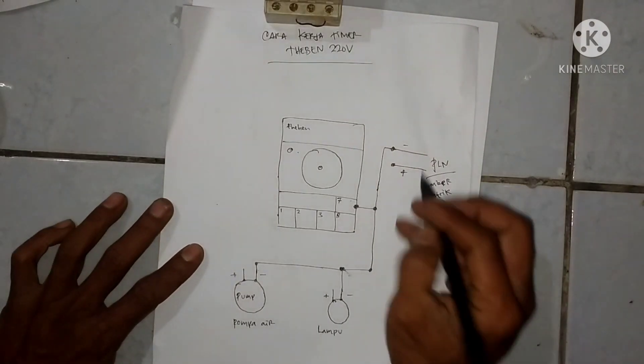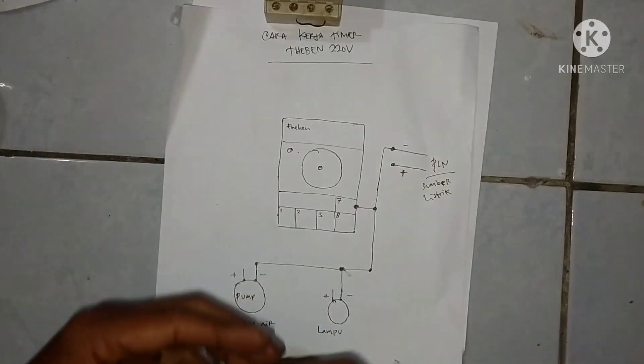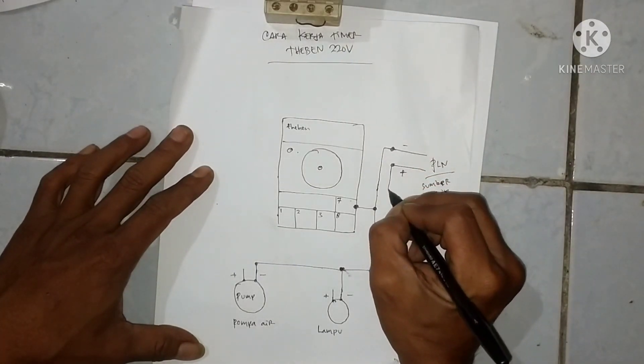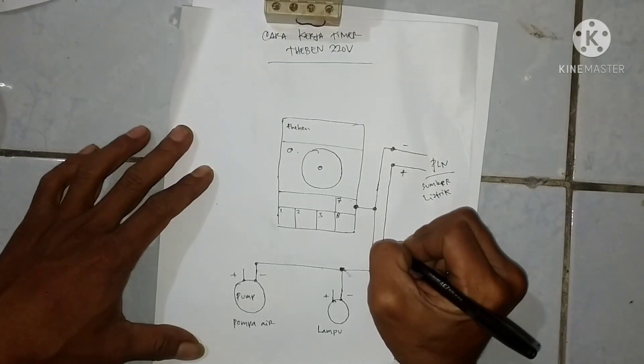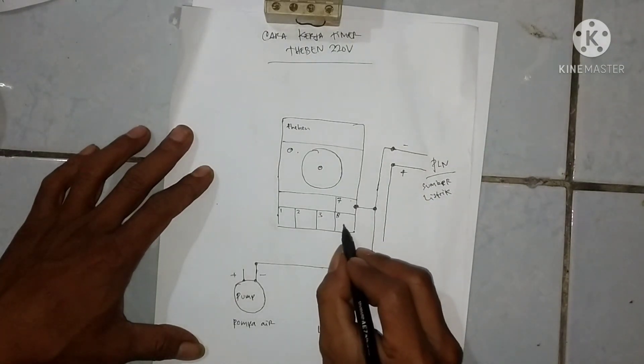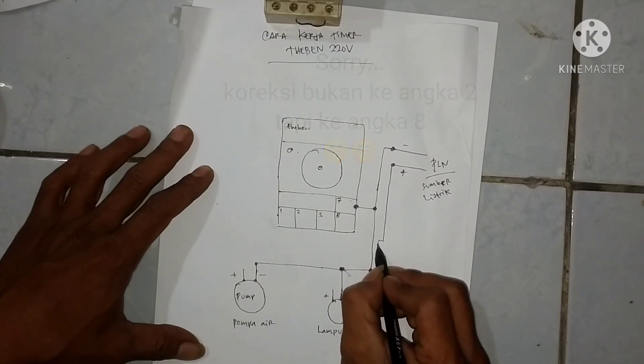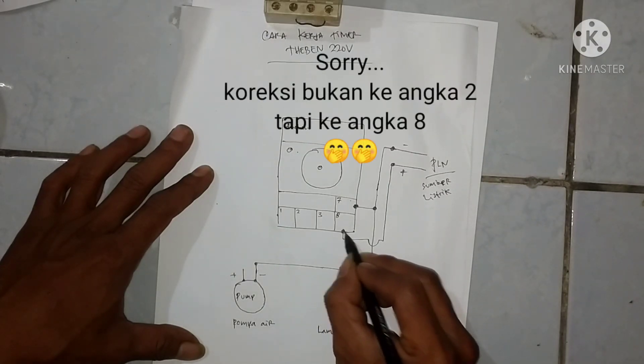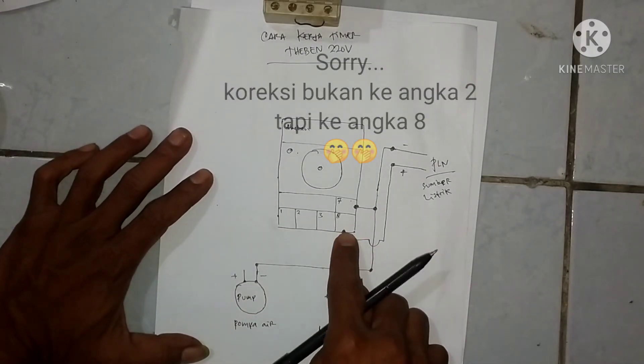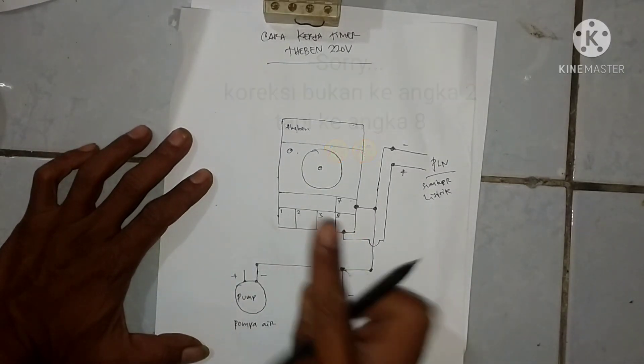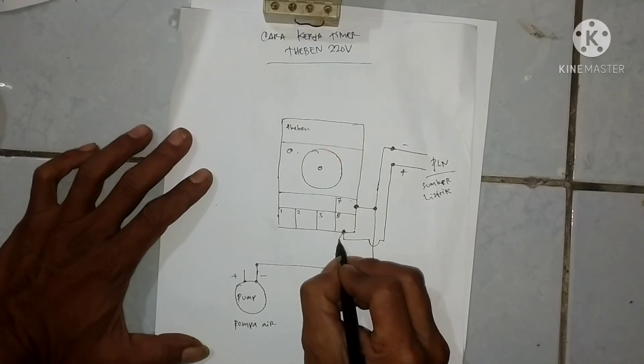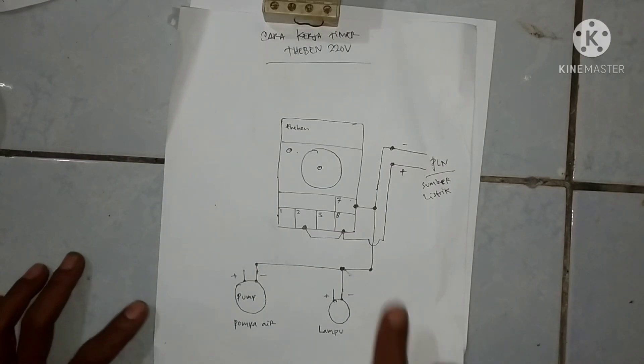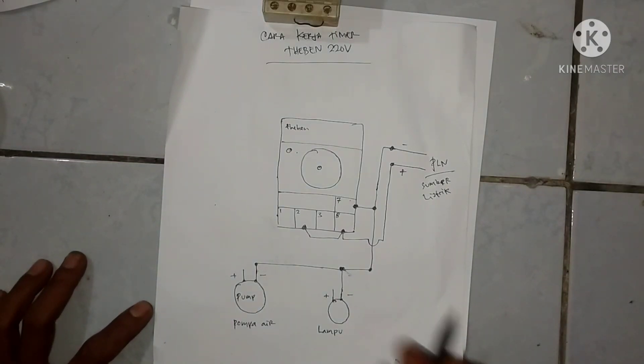Nah kemudian kemana nih yang pasangnya listriknya stroom. Stroom ini kita tarik masuk ke angka 2. Nah ini lekuk ini berarti tidak terhubung ya lewat. Sorry bukan ke angka 2, ke angka 8 maksud saya, ke angka 8 karena dia buat penggerak motor. Lalu kita jumper ke angka 2 ini nih, jumperan itu jumperannya.